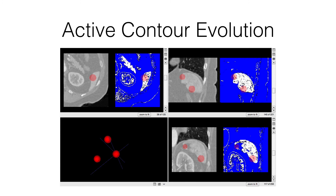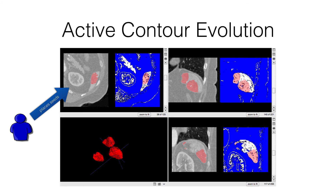Here is an example of the active contour evolution. We place these balls rendered in 3D as spheres — that's just the manual initialization. Then it grows as shown on the right, and you can see the 3D window updating. You can stop this at any time to look at it, but it keeps growing until you tell it to stop, or it will eventually hopefully converge. Then you just hit stop and you're done, or you can go to manual editing after that.